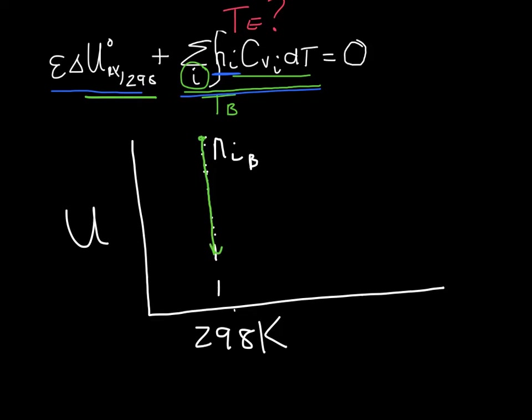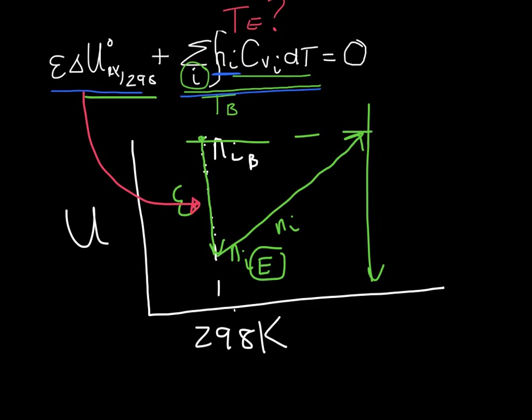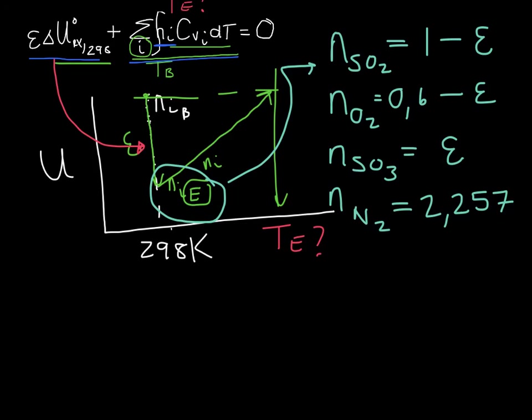Since we only have the reaction internal energy available at 298 Kelvin we will first react our mixture in order to form our products that is going to be present at the end. And then we are going to heat up our resultant product mixture that is now present in the reactor to that unknown final temperature.